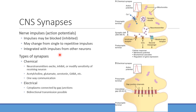Synapses can be electrical or chemical. Electrical synapses use gap junctions, allowing action potentials to transmit easily and even bidirectionally, though that's not common. Chemical synapses — much more common — only allow one-way communication. Neurotransmitters released from synaptic vesicles interact with receptors on the next neuron. They can excite, inhibit, or modify the signal. Key neurotransmitters include acetylcholine, glutamate, serotonin, and GABA.